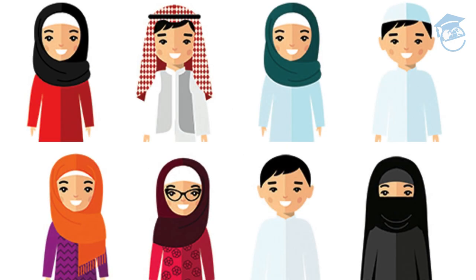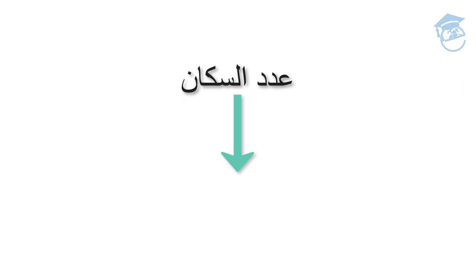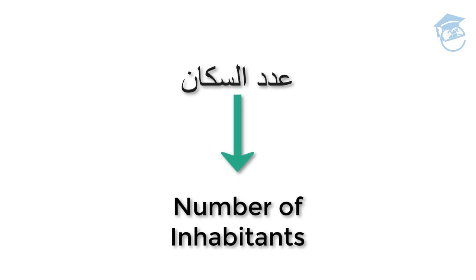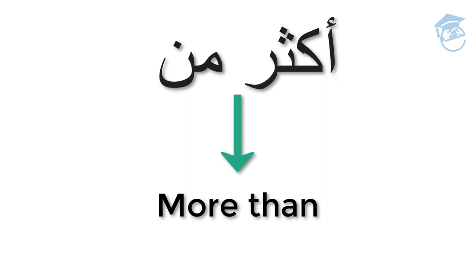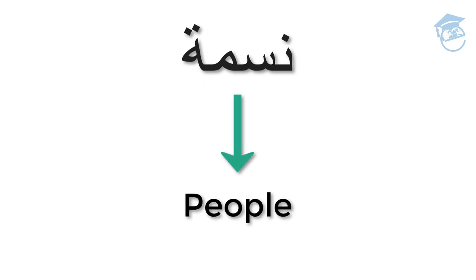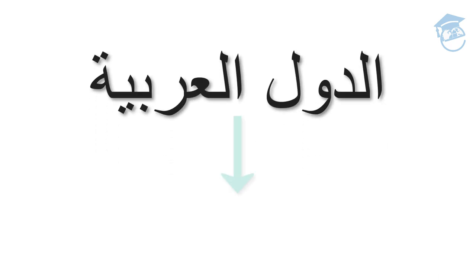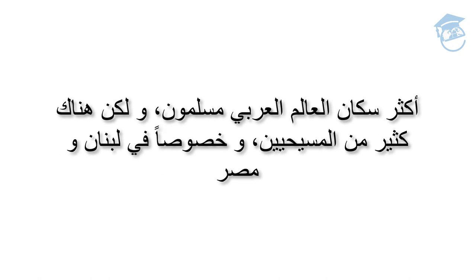Aded Suqan Al-Alam Al-Arabi Akther Min Arba Mi'at Milyon Nesema — the population of the Arab world is more than 400 million. Aded Suqan means 'number of inhabitants.' Akther Min means 'more than.' Nesema means 'people,' used in the population sense. Ad-Dual Al-Arabiya means 'the Arab countries.'